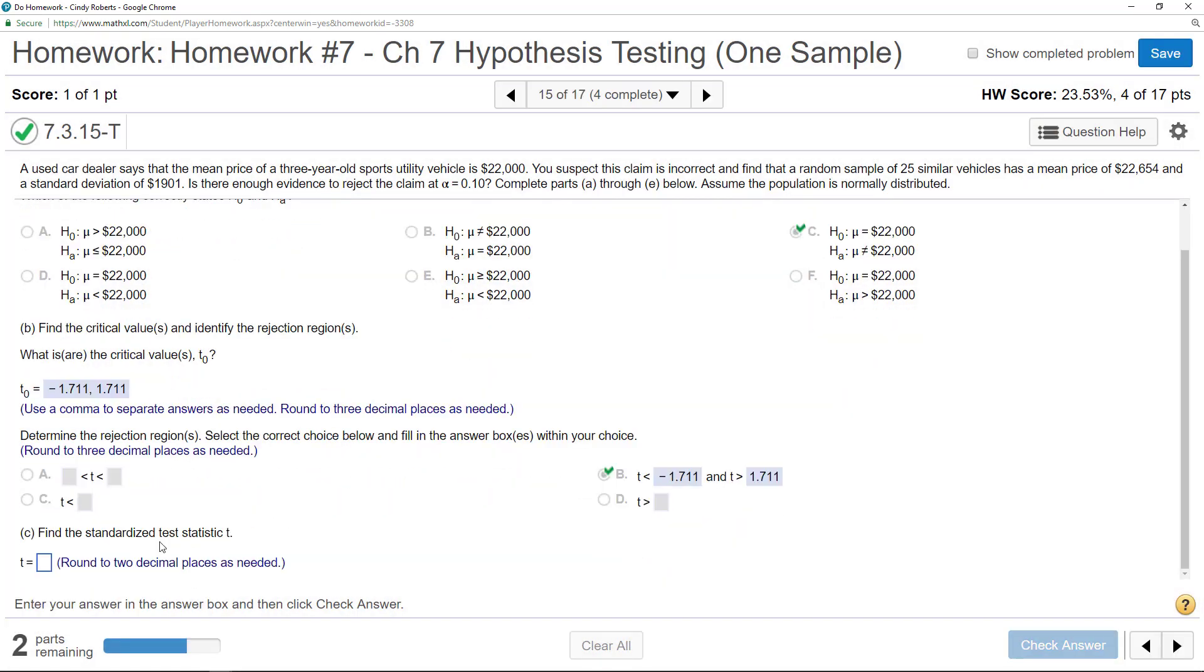Now we want to find the test statistic. You use the same formula where you take the sample mean minus what the null mean is divided by, but then you would take the sample standard deviation, the S, 1901, divided by the square root of N, which is 25. But I'm going to be lazy and use StatCrunch.